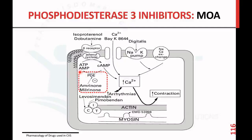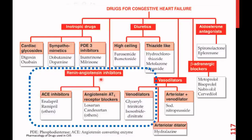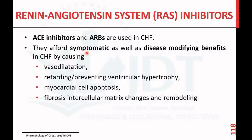Milrinone and amrinone inhibit the conversion of cyclic AMP to AMP, thereby increasing the amount of cyclic AMP. This increased cyclic AMP raises the calcium ion concentration, producing contraction. Coming to the second class — renin-angiotensin inhibitors, such as ACE inhibitors and angiotensin receptor blockers — these are used in CHF and afford sympathetic as well as disease-modifying benefits by causing vasodilation and retarding or preventing ventricular hypertrophy, myocardial cell apoptosis, and fibrosis.